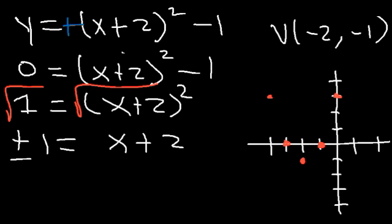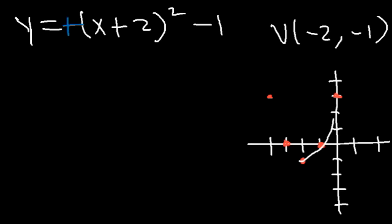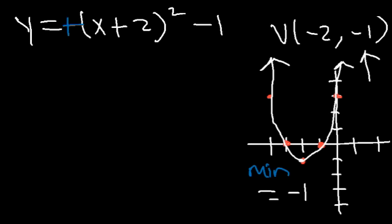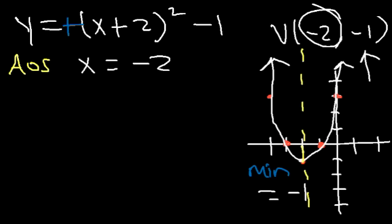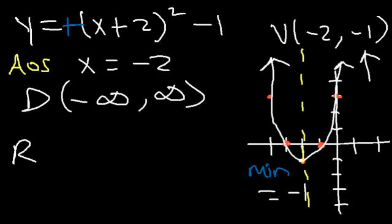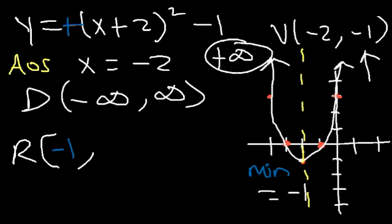The parabola opens upward, so it has a minimum value. The minimum value is the y-coordinate of the vertex, which is negative 1. The axis of symmetry is x equals negative 2. The domain is all real numbers. The range: the lowest y-value is negative 1 and the graph goes up toward positive infinity, so the range is from negative 1 to infinity.